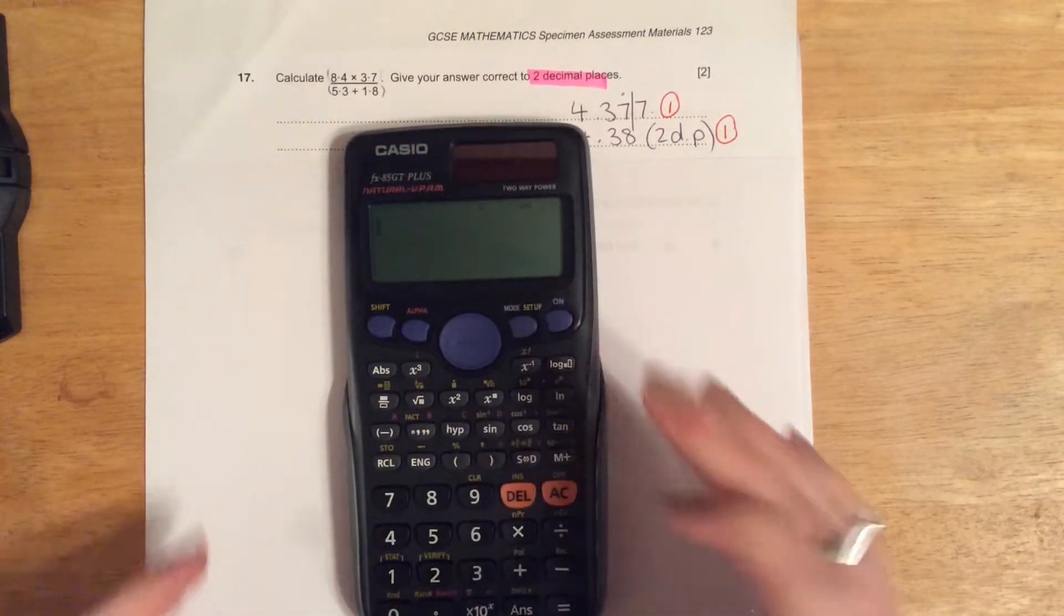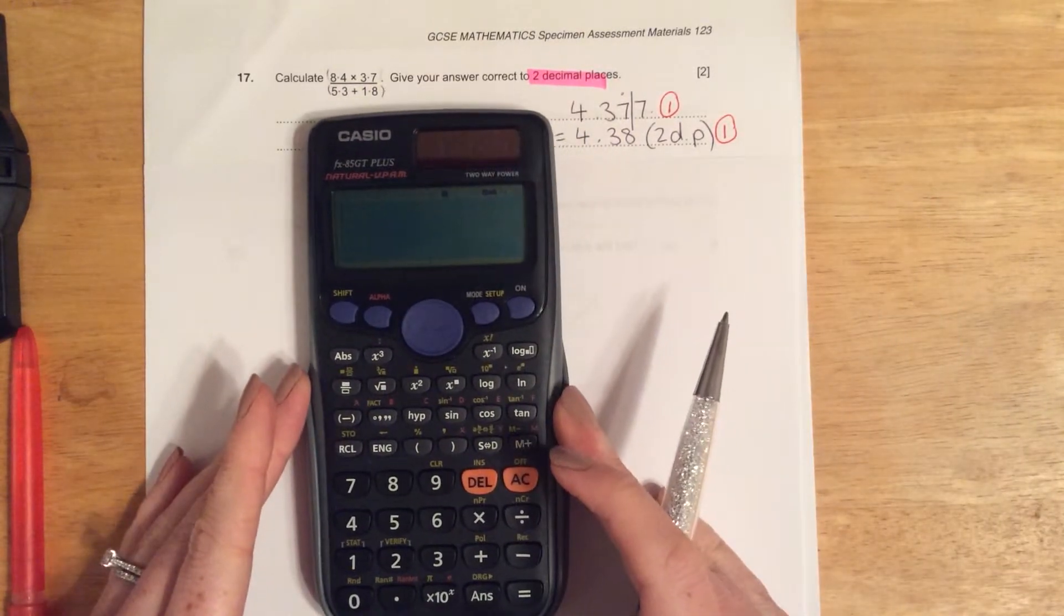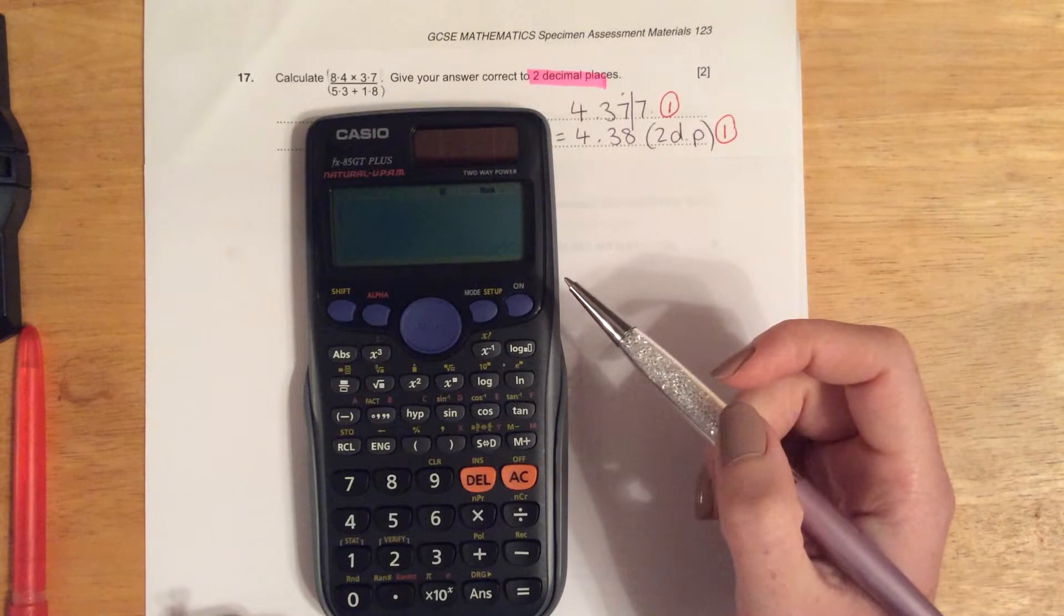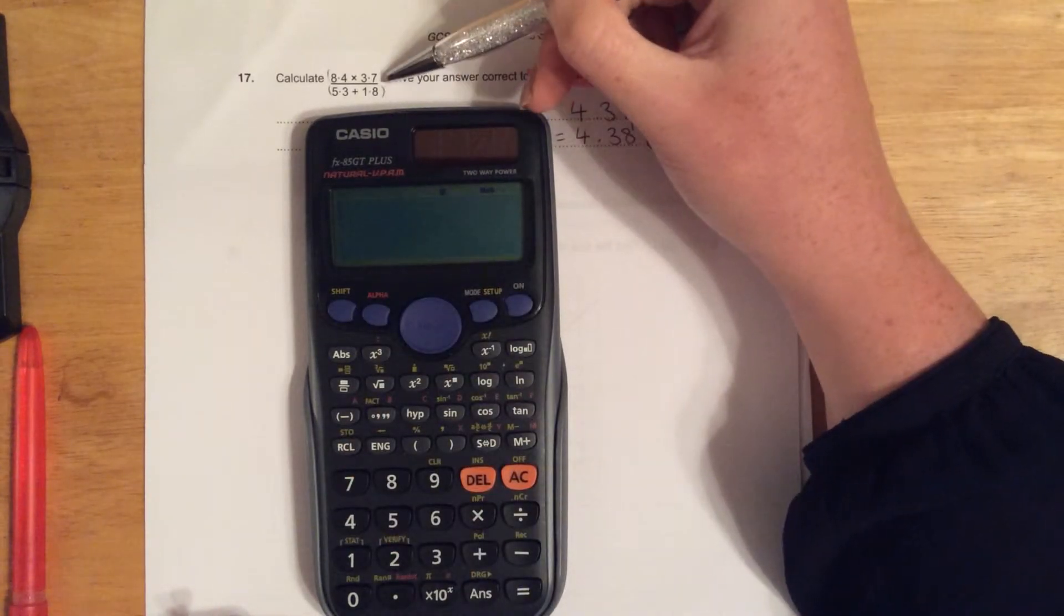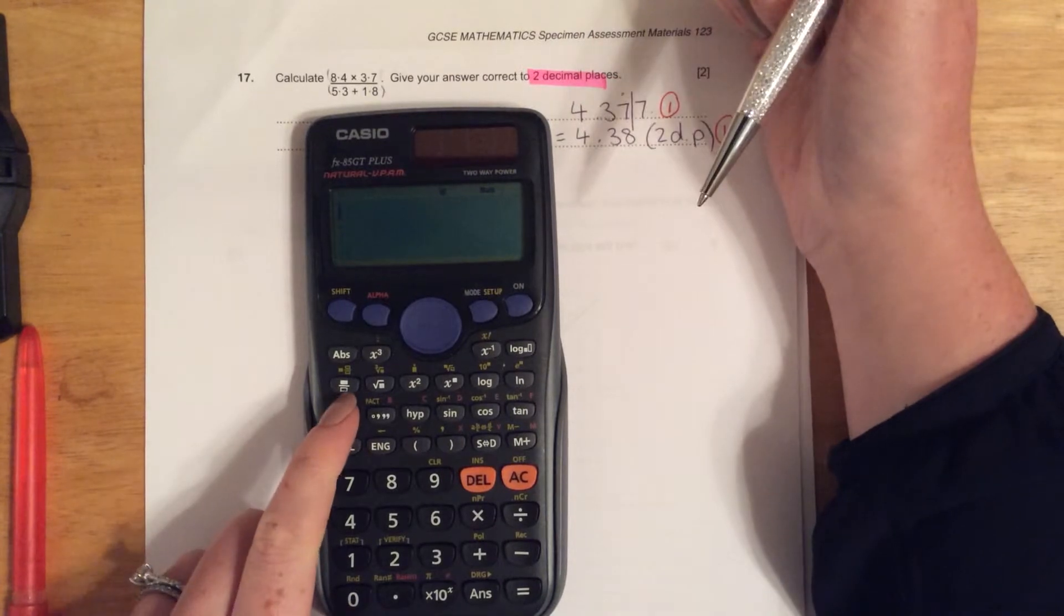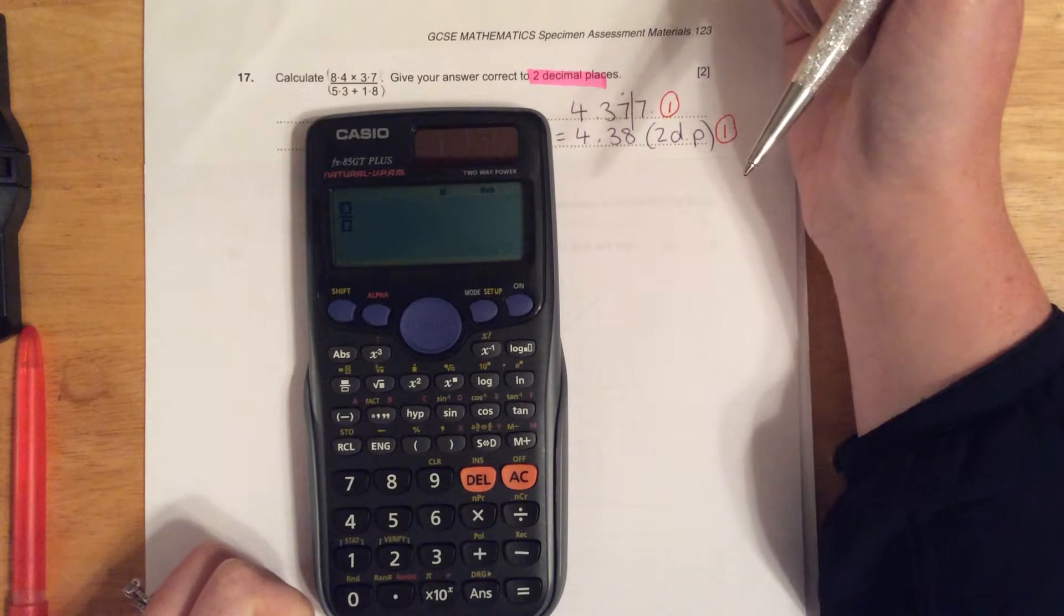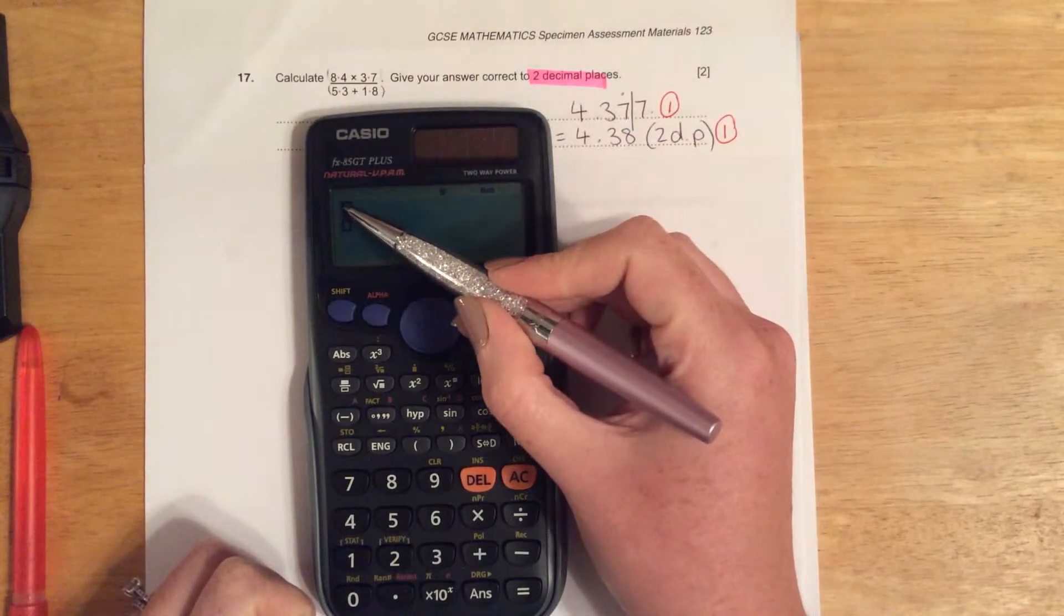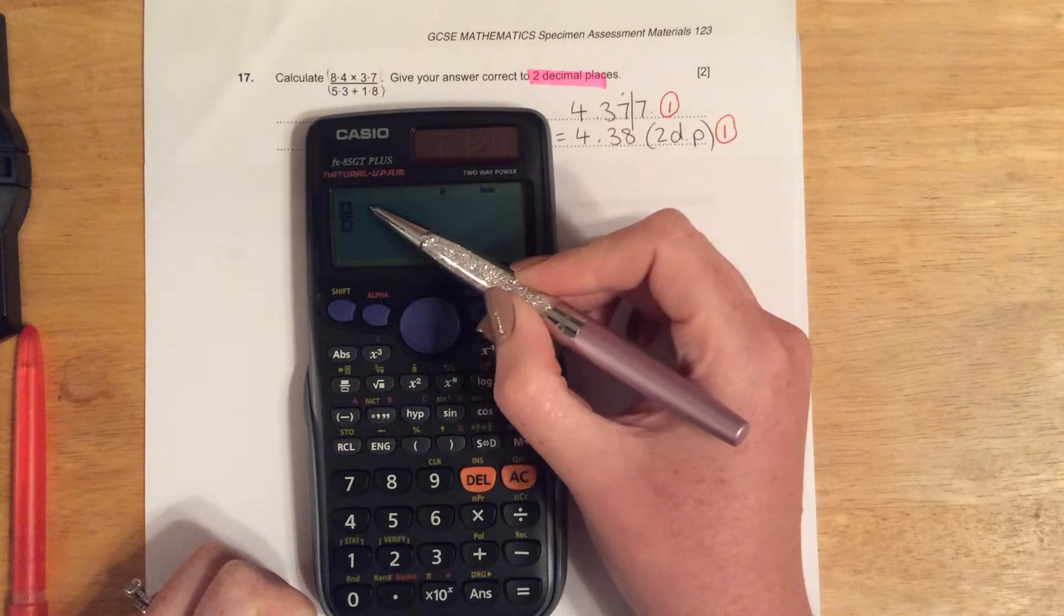If you're using a Casio calculator like I am here, you can actually input this differently. This is set out as a fraction, so you press the fraction button here and you'll see this symbol come up on your calculator. The cursor is here, so that means you're inputting the numerator, the top number of the fraction.